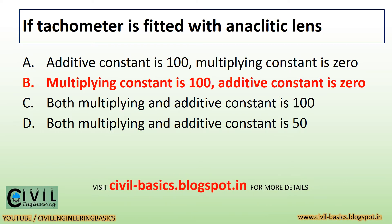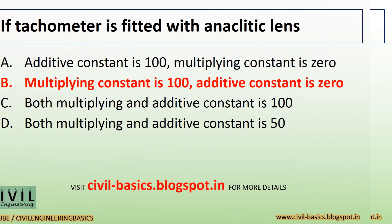If a tachometer is fitted with an anallactic lens, the multiplying constant is 100 and the additive constant is 0.